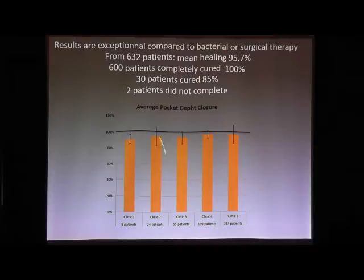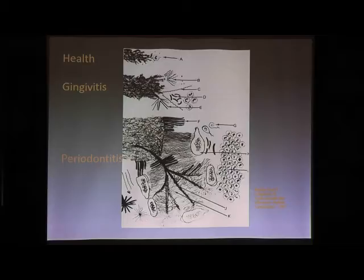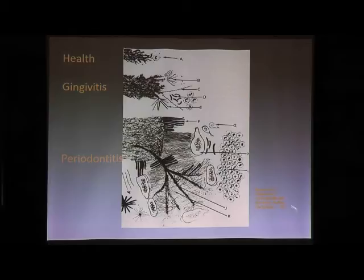We did this examination and treatment for 632 patients and measured healing with the probe. For about 600 patients, all pockets closed and went to normal at 12 months — 100% cure for 600 patients. Only 30 patients reached about 85%. It's not perfect, but it's clearly very good — more than what we can find anywhere with conventional methods. Two patients did not complete. These were different clinics: small, large, and very large clinics with periodontists doing this anti-parasitic therapy, and the result was very good in all.